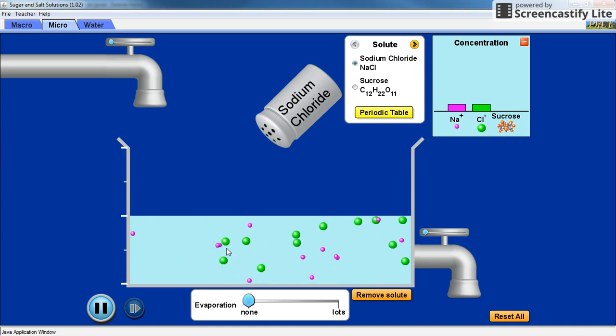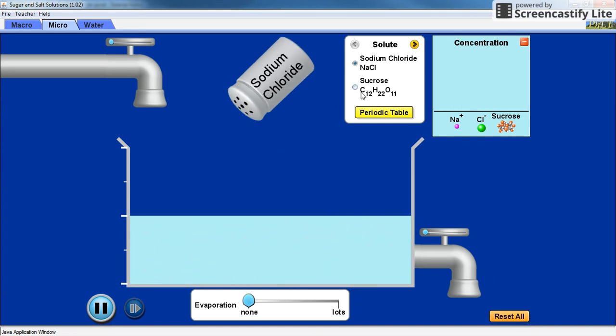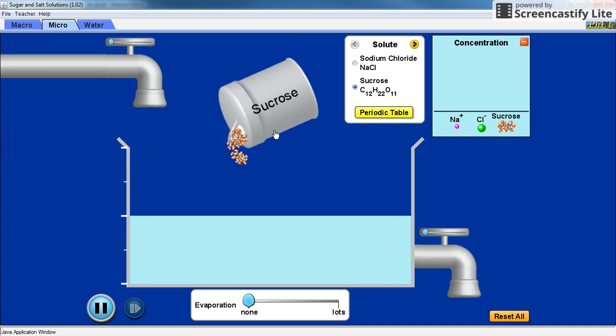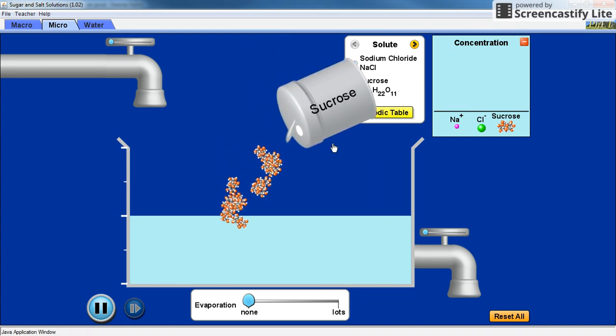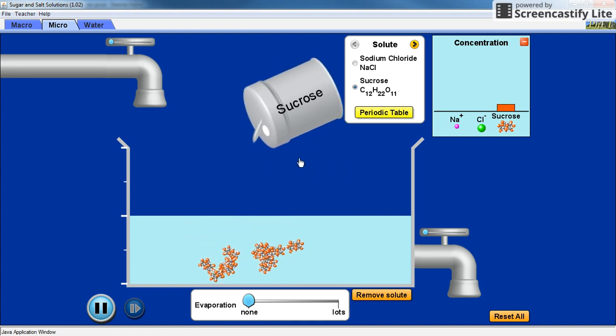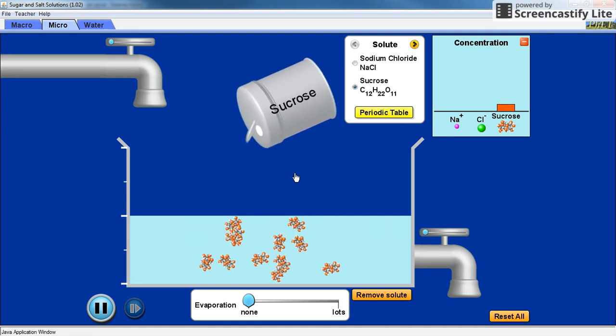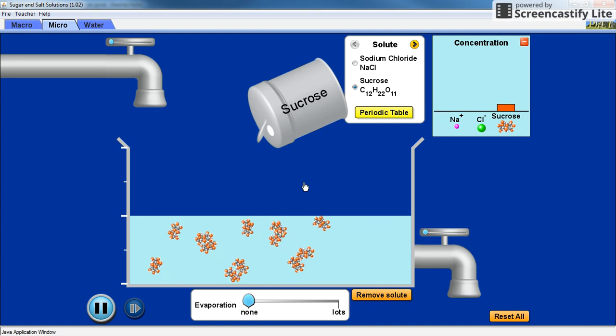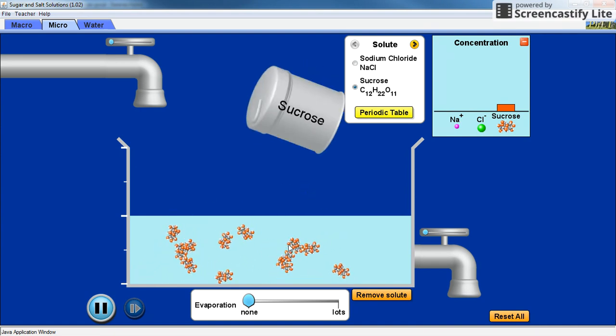I can now reset and add sugar. Notice with the sugar particles, although I had my sodium and chloride breaking up into sodium and chloride ions, my sugar particles do not break up. The molecules still remain a molecule. I do not break any carbon-hydrogen or carbon-oxygen bonds.